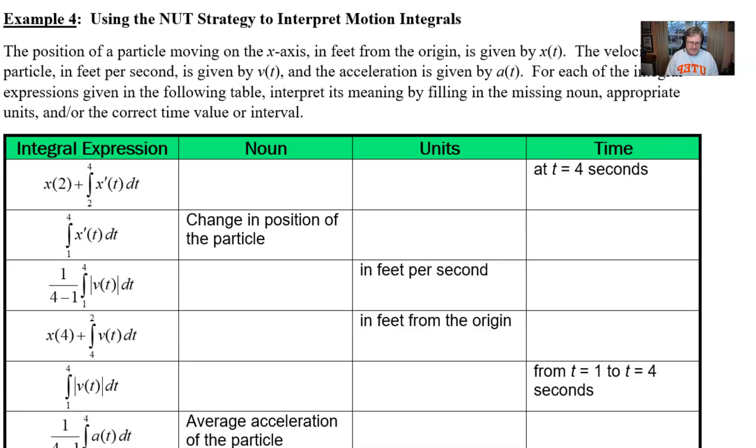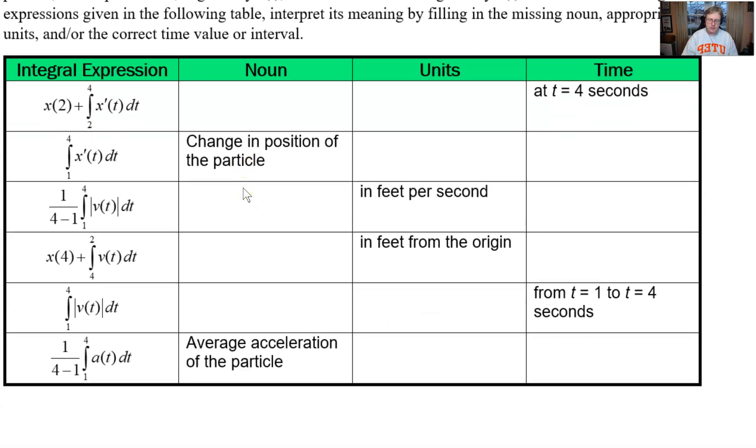So I've got an interesting little activity here that I think really goes a long way in helping to develop what the meanings are of these symbols in the left column. The position of a particle moving along the x-axis in feet from the origin is given by x(t). The velocity of the particle in feet per second is given by v(t) and the acceleration is given by a(t). For each of the integral expressions given in the following table, interpret its meaning by filling in the missing noun, appropriate units, and or the correct time value or interval. This will really help us better understand how to interpret the meaning of an integral in context.